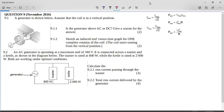Is the generator above AC or DC? Give a reason for the answer. Well, if you have a look here, how do you tell the difference? You have to look at the rings, and you can clearly see that this is a split ring. So the moment you have a split ring, you know that it is DC because there's a split ring or a commutator.